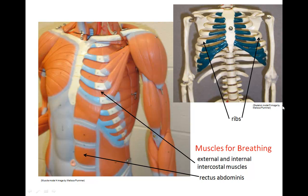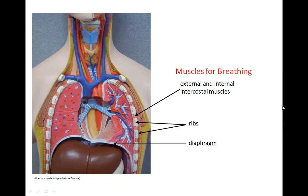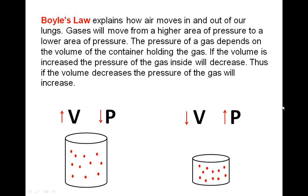Your abdominal muscles will also come into play to push up into the lungs. The external and internal intercostal muscles control the movements of the rib cage. The most important muscle for breathing is your diaphragm. The movements of the rib cage and contraction of the diaphragm relate to Boyle's Law, which explains how air moves in and out of our lungs. Gases move from an area of higher pressure to an area of lower pressure.